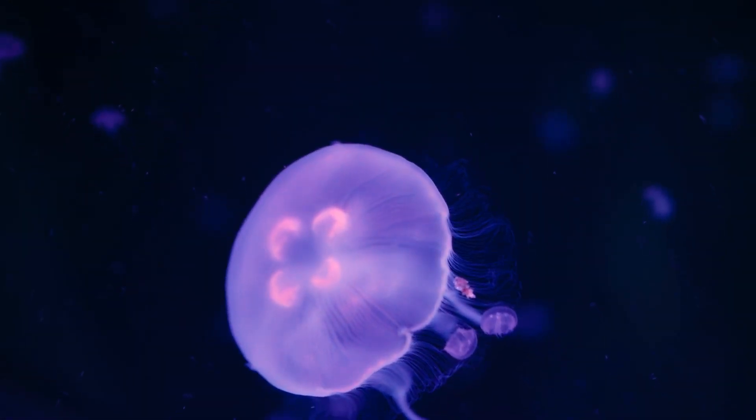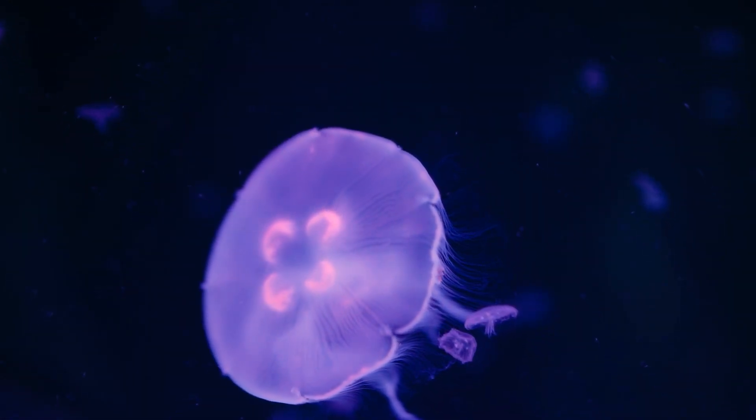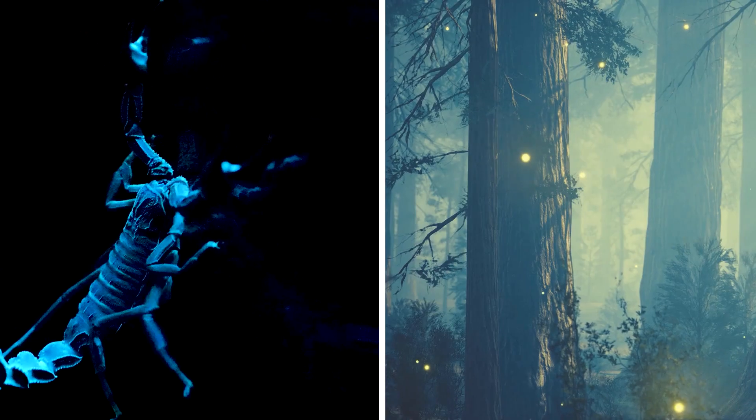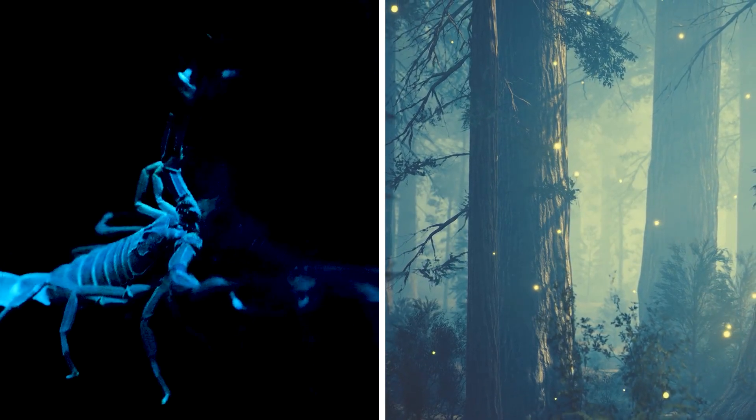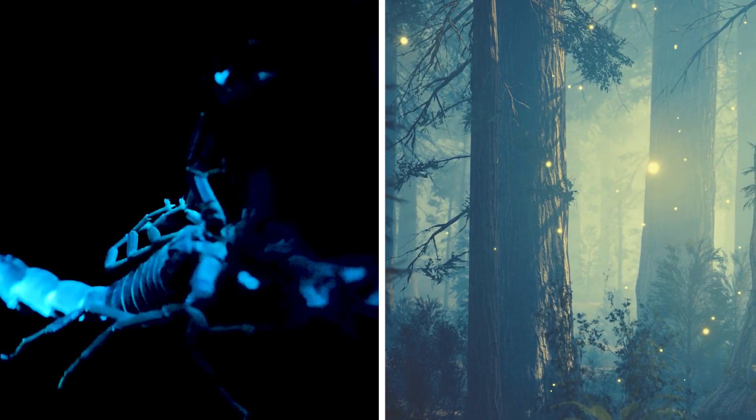The natural world is full of things that glow, but there's more than one way that they can do so. Some are biofluorescent and others are bioluminescent, but what's the difference between the two?